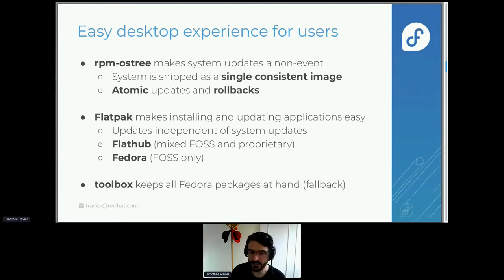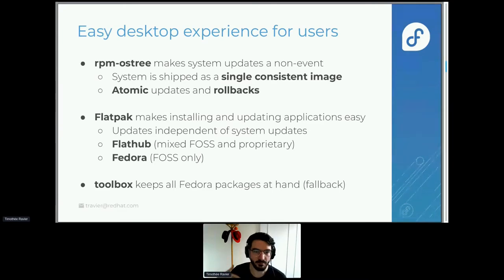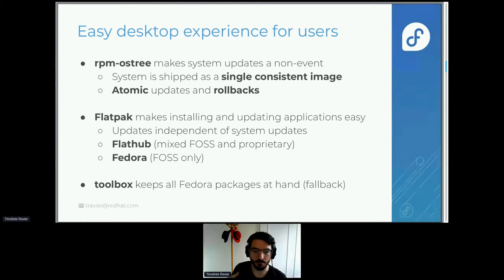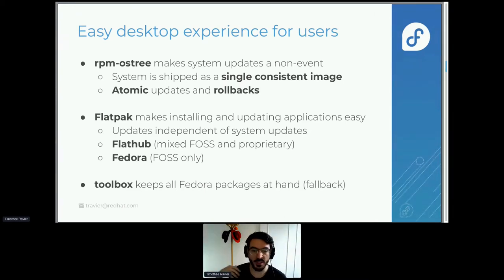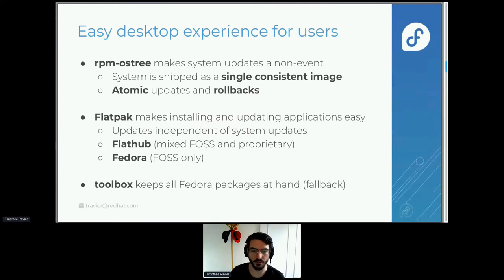The updates are atomic — they work as a single image. You can still modify things in there, but that's the idea. On top of that we use Flatpak, which makes installing applications really easy because they don't conflict with anything on the system. You can get them from Fedora directly for pure open source software, or from Flathub for a mix of proprietary and free and open source software. Finally, you get Toolbox, which builds on top of Podman — you can install any packages from Fedora or any other distribution and run them in toolboxes, which is a great way to work around current limitations of the system.